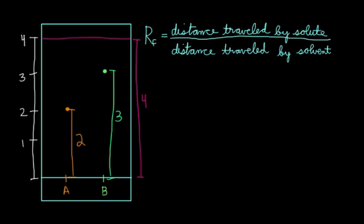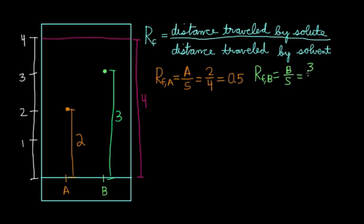So let's plug that into our equation. If we wanted to solve the RF of A, you need the distance traveled by compound A over the distance traveled by the solvent. So let's say A over S. Here, that would be equal to 2 over 4. And the convention is to report these values as decimal points. So we'll say that this is 0.5. Now we'll do the same for compound B. RF of B is equal to distance traveled by B over distance traveled by S. In this case, that's equal to 3 over 4, or 0.75.